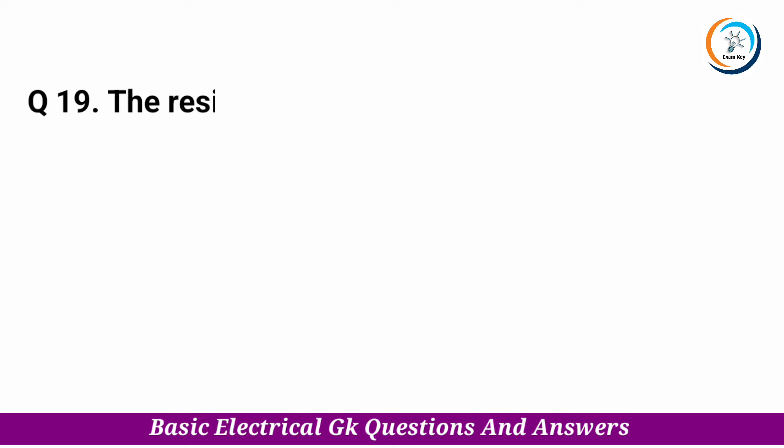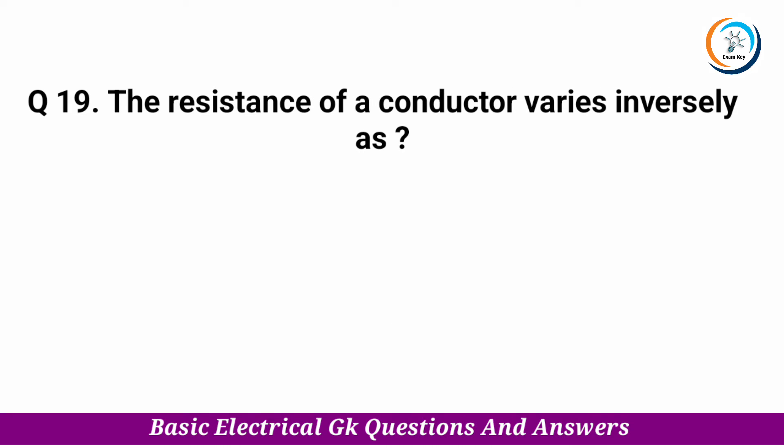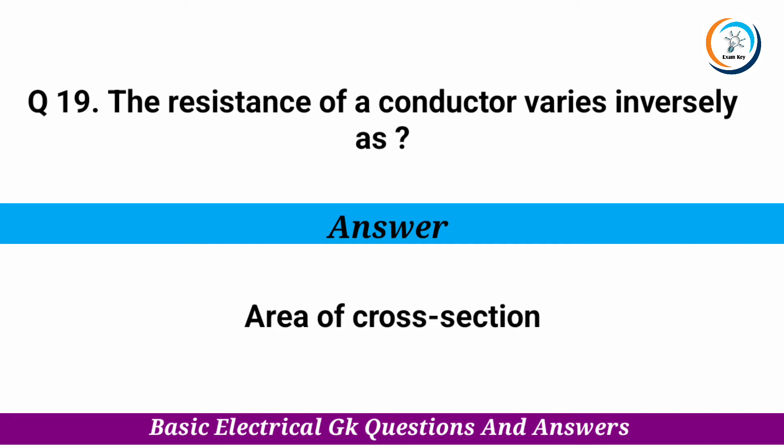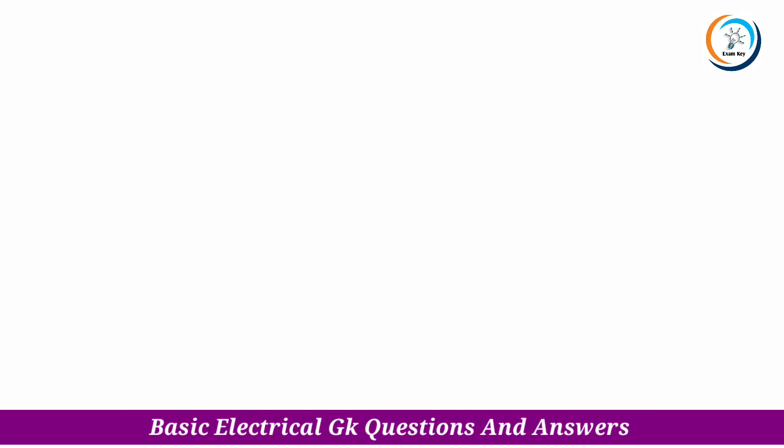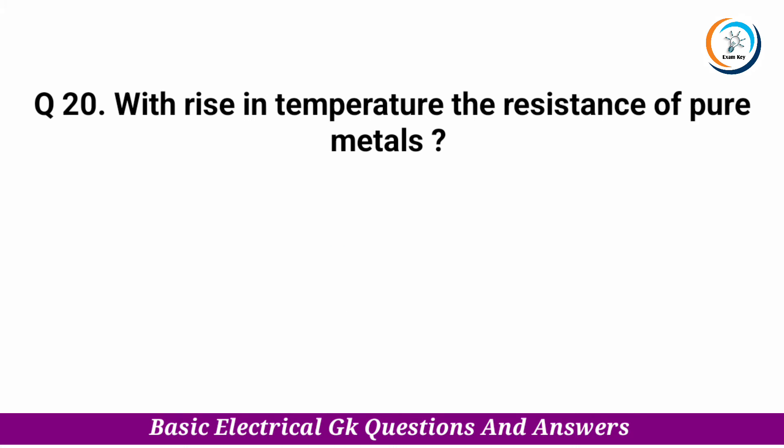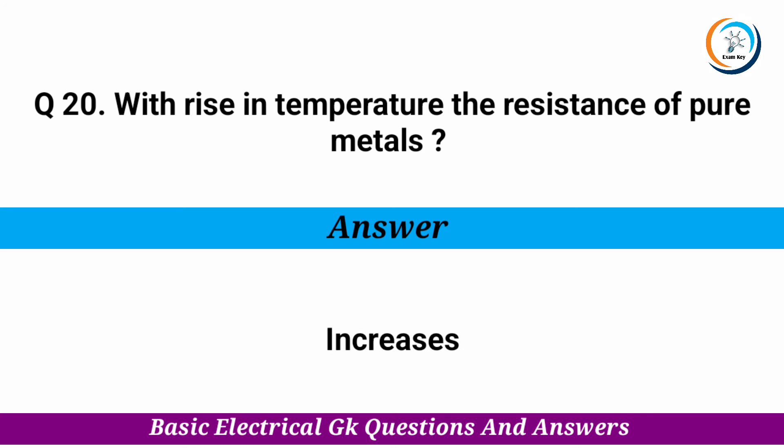The resistance of a conductor varies inversely as — Answer: area of cross-section. With rise in temperature, the resistance of pure metals — Answer: increases.